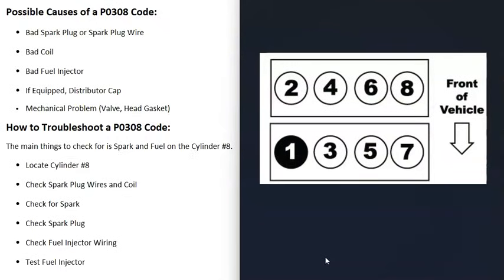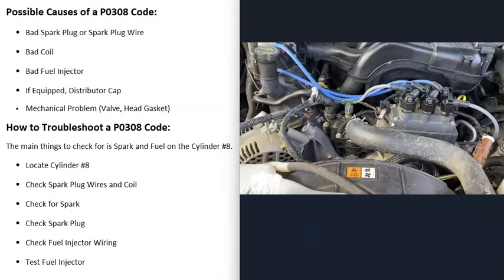To troubleshoot a P0308 code, the first thing to do is find out which cylinder on your engine is the number 8 cylinder. This depends on the engine and the year. If you go to Google Images and type in your engine along with 'firing order' or 'cylinder location,' a diagram should pop up telling you which cylinder is number 8.